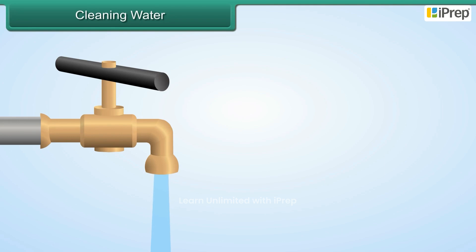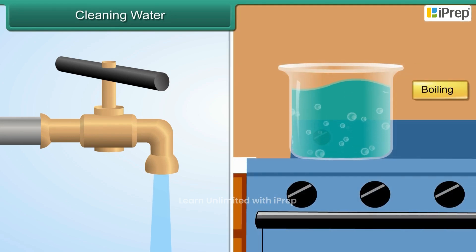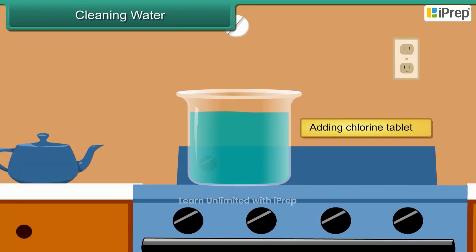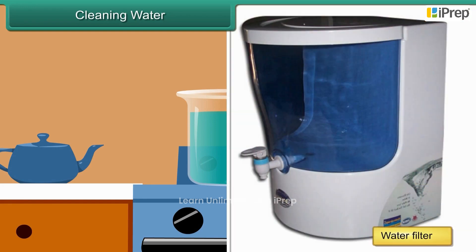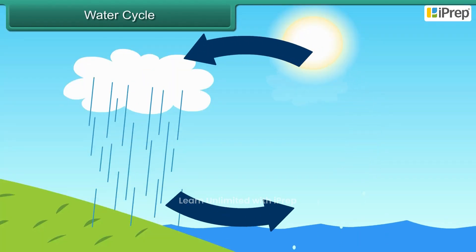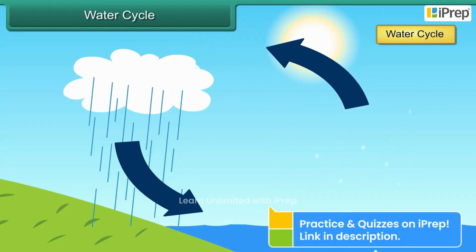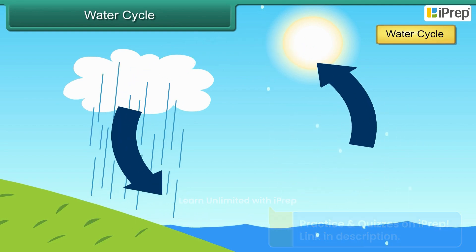Therefore water must be cleaned first; only then does it become fit for drinking. We can clean and purify water by boiling it, adding alum to it, adding chlorine tablets to it, or using water filters at home.